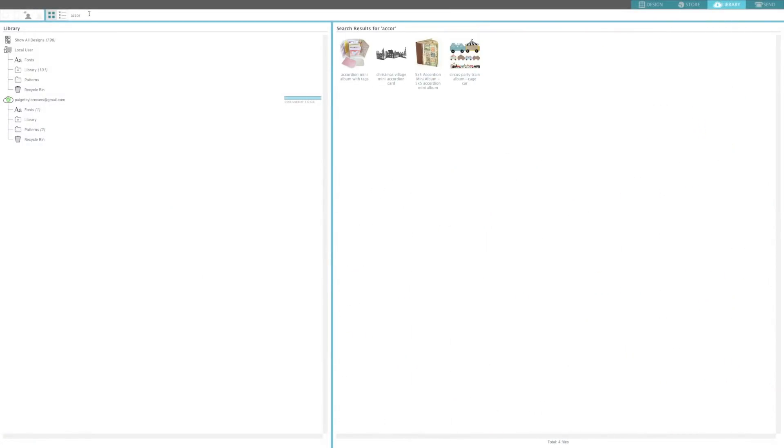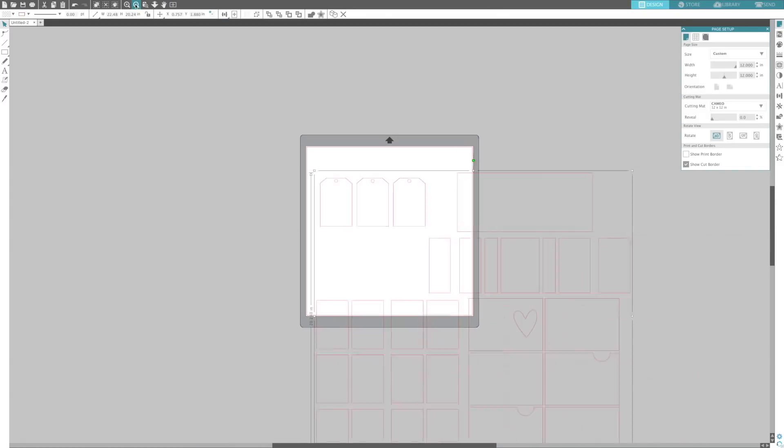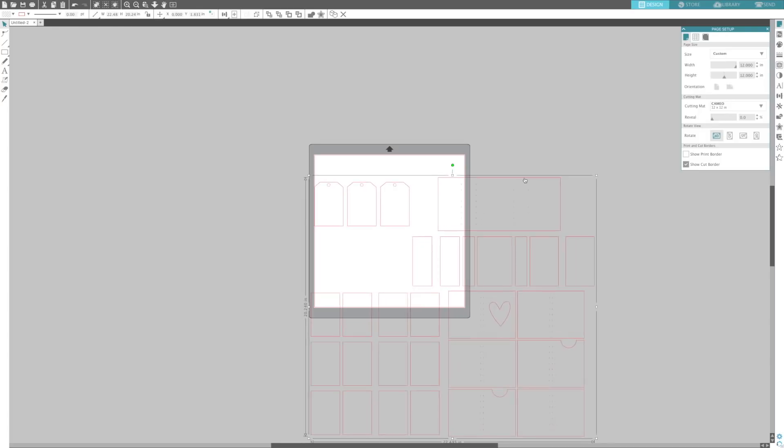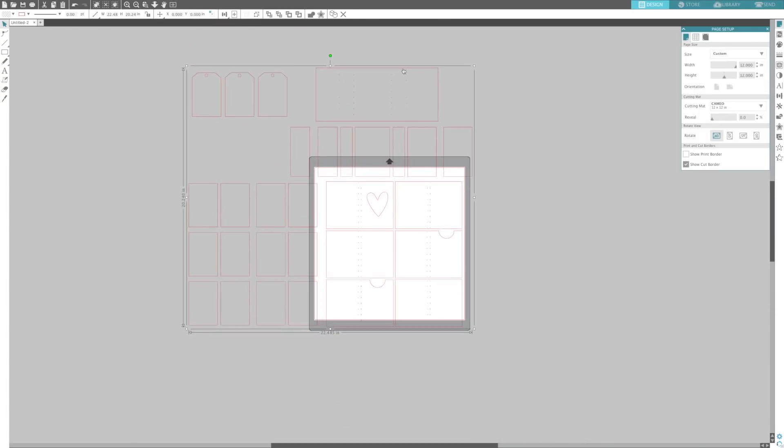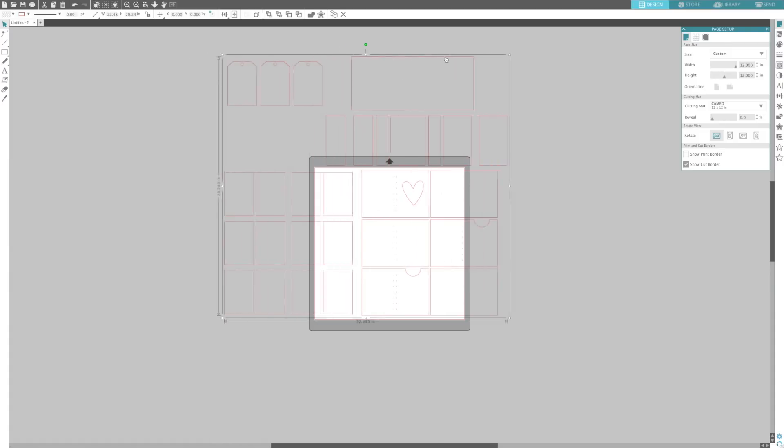Once you have purchased the cut file, you want to go into your library and search for accordion and it should come up pretty quickly, or if you want to search for it on the Silhouette store, it's called Accordion Mini Album with Tags, design ID number 268004. I will also leave a link to it below.